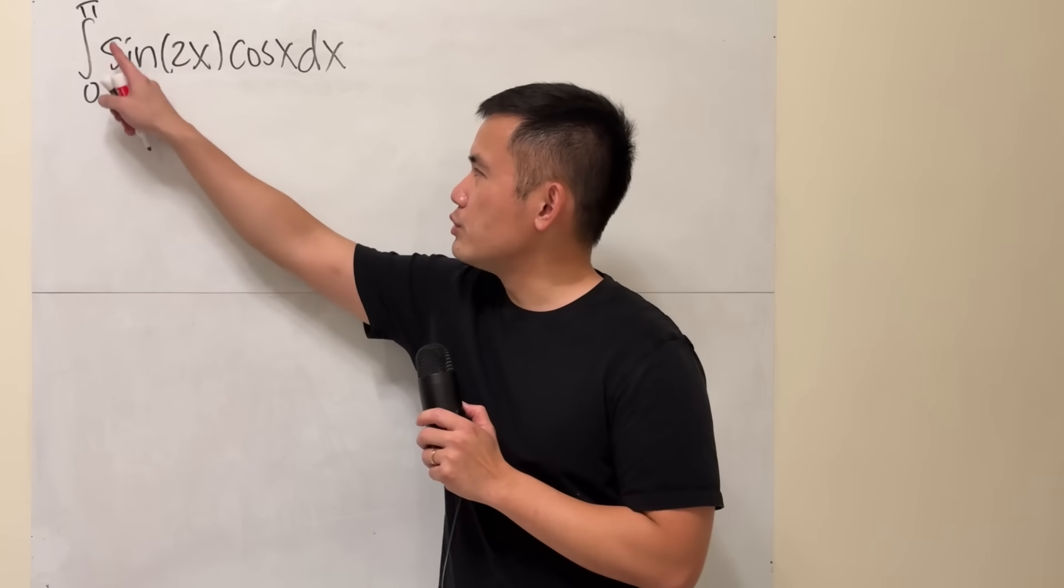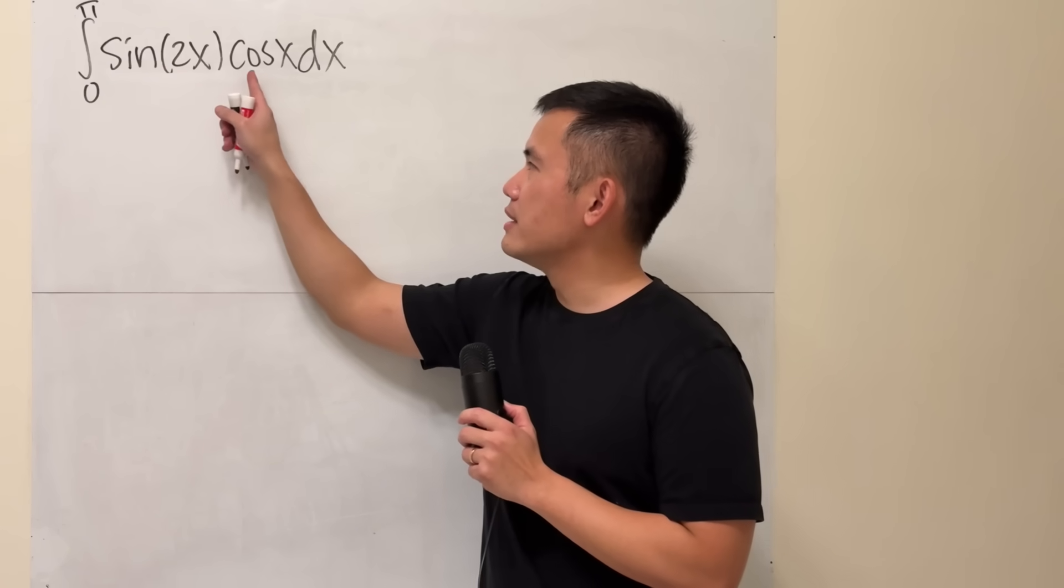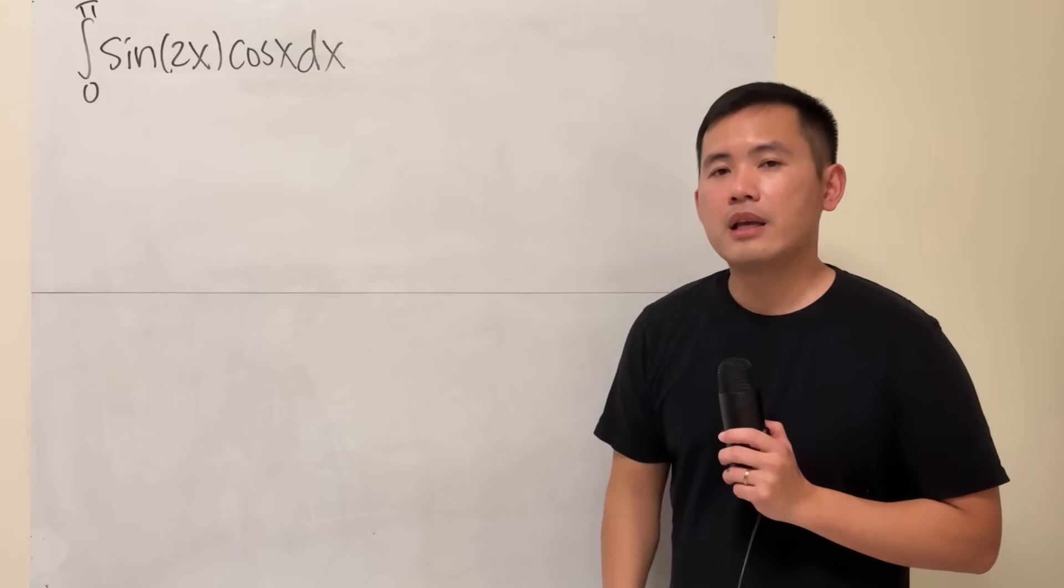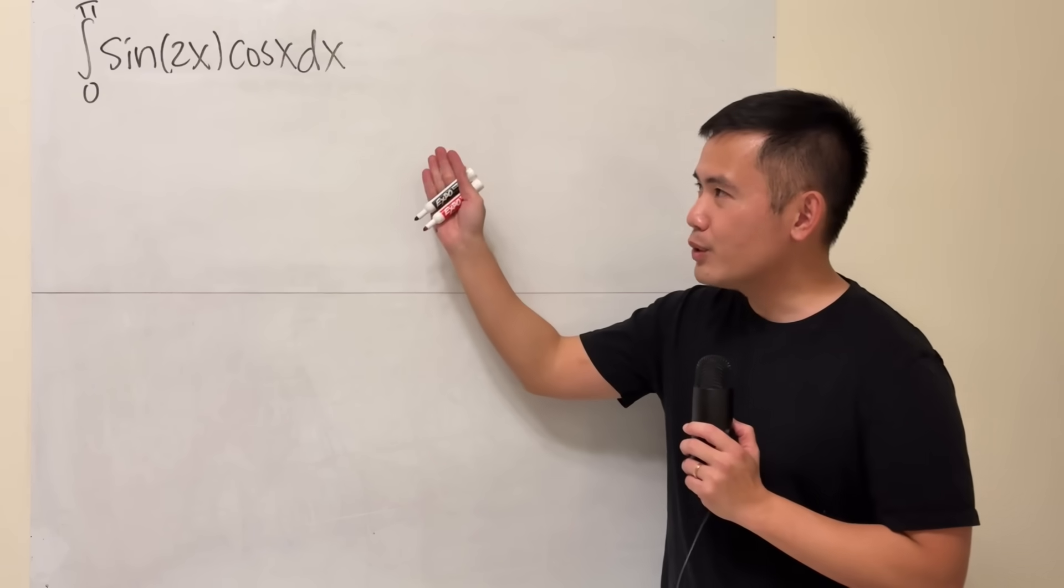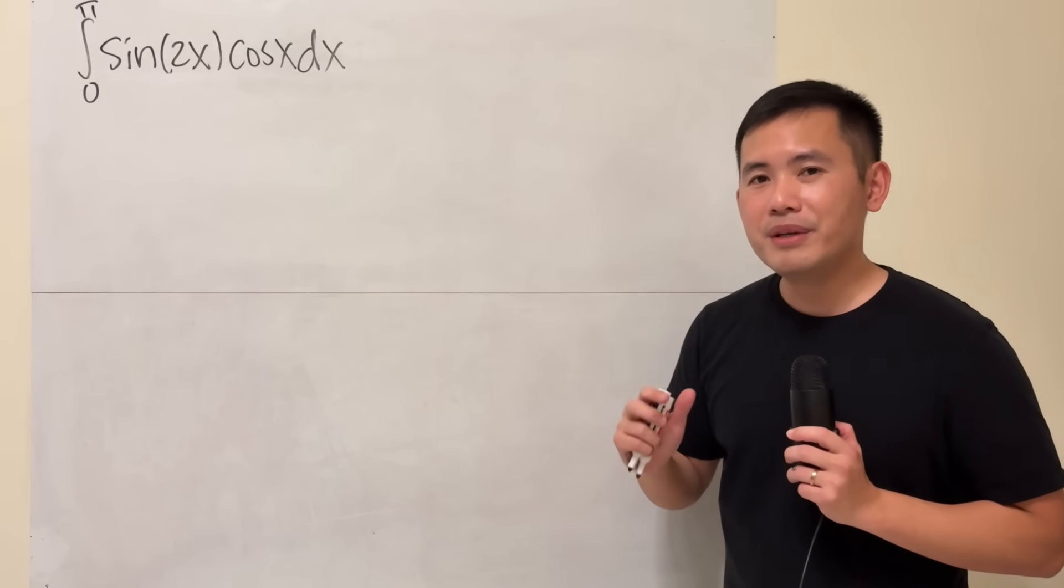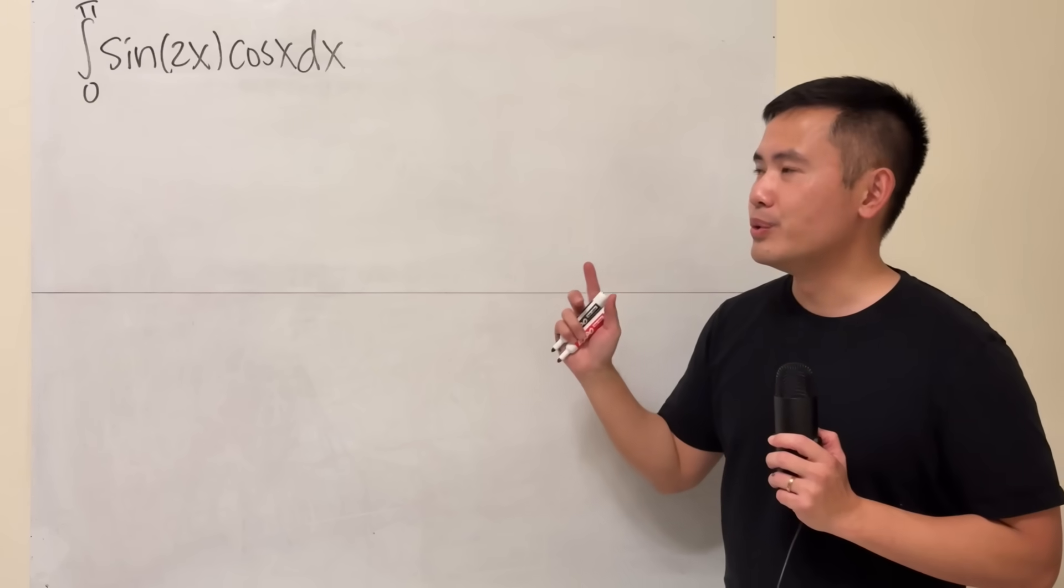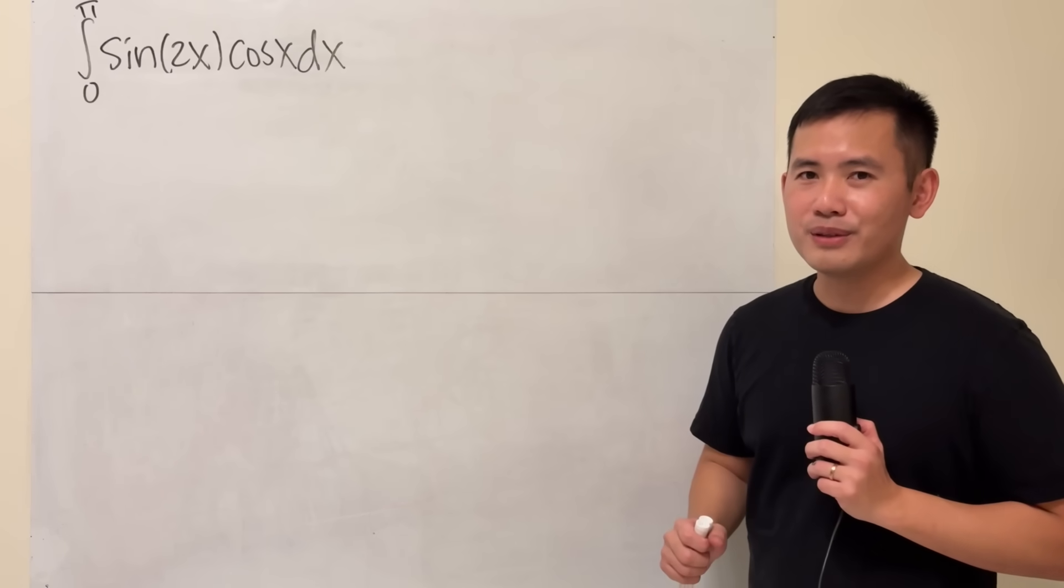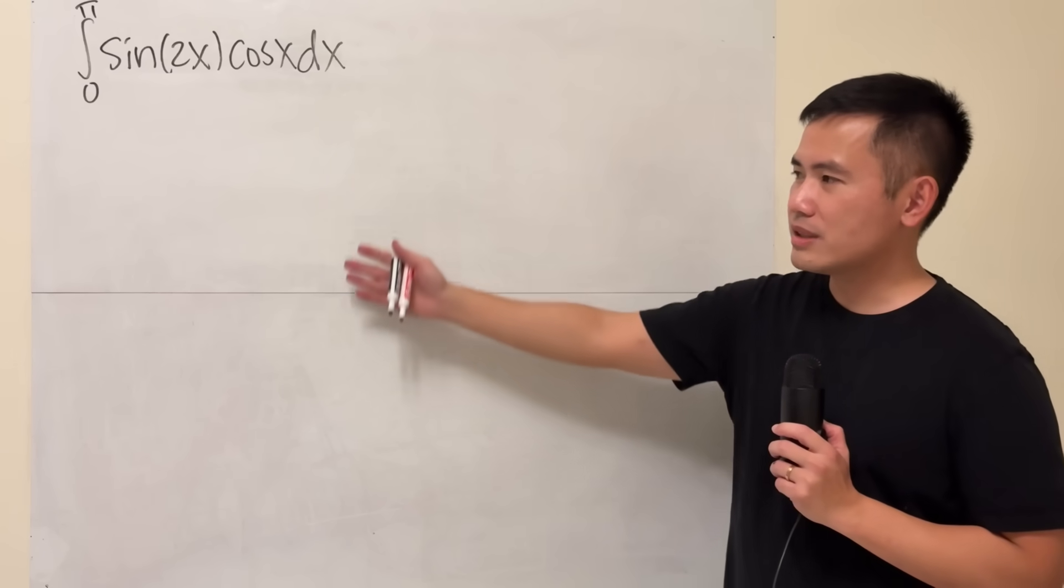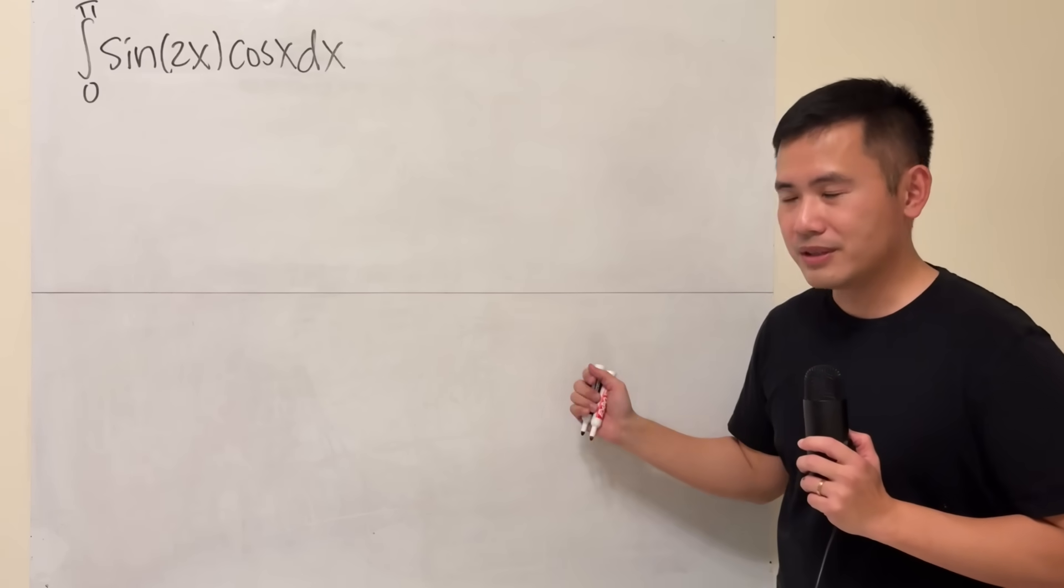Right here we have the integral going from 0 to pi of sine of 2x times cosine of x. If you're learning integrals for the first time, then I will tell you integrals are hard because there are so many ways to do integrals, and sometimes an integral is not even possible. But I will first work this out for you and I'll tell you more about this later on.